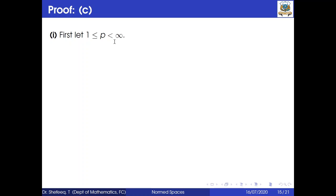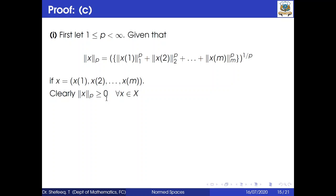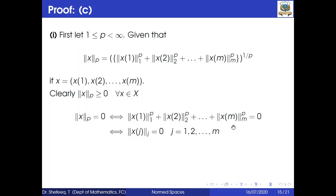Proof of part C. For the case 1 ≤ p < ∞, define ‖x‖_p = (‖x_1‖_1^p + … + ‖x_M‖_M^p)^{1/p}. Clearly ‖x‖_p ≥ 0 by definition. If ‖x‖_p = 0, then each ‖x_j‖_j = 0 for all j = 1, …, M, which means each x_j = 0 and hence x = 0. Conversely if x = 0 then ‖x‖_p = 0. This is the if-and-only-if condition — the first condition is satisfied.